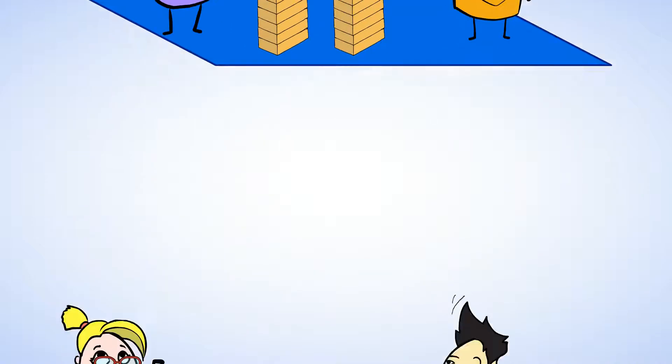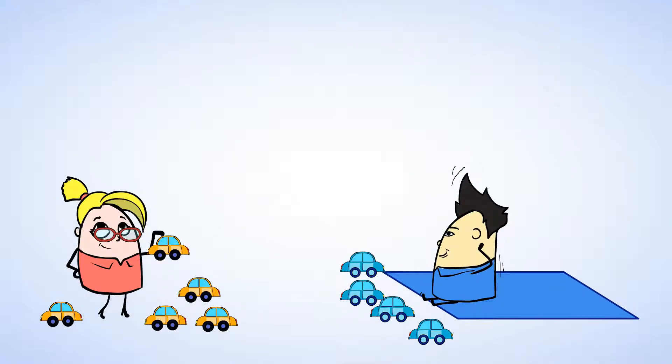Good job! It looks like Jenny and Chen are all done with their blocks. They're playing with cars now. Jenny is playing with five cars, and Chen is playing with four cars. Is Jenny playing with more or fewer cars than Chen? Well, let's take a look.